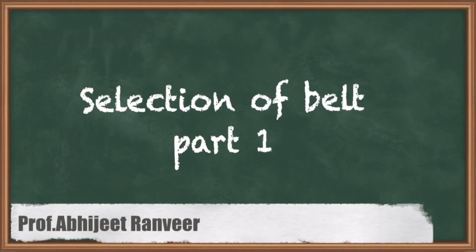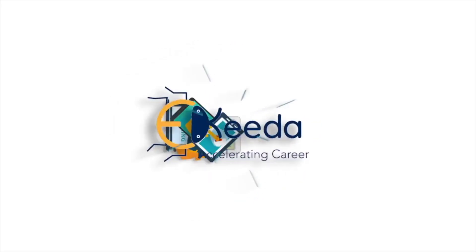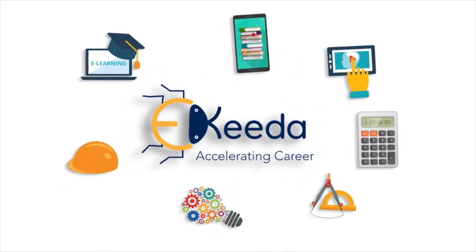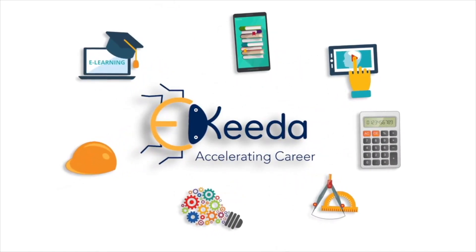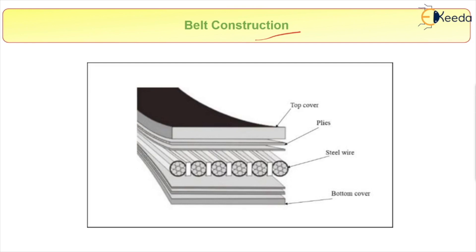Here we are going to study the belt construction — how a belt conveyor is constructed. The first layer is the top cover, which is the upper part of the belt. Next we have plies, then steel wires, and finally the bottom cover.